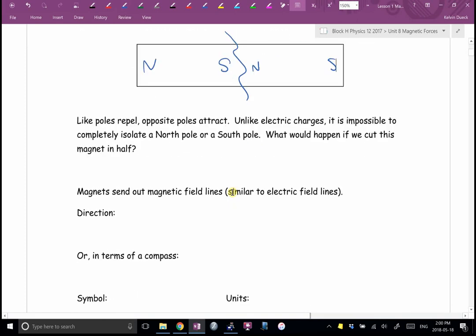As I showed you already, I was able to make a magnet move without touching it. That suggests that magnets send out magnetic field lines. The direction of magnetic field lines is a little easier - magnetic field lines always point from north to south.